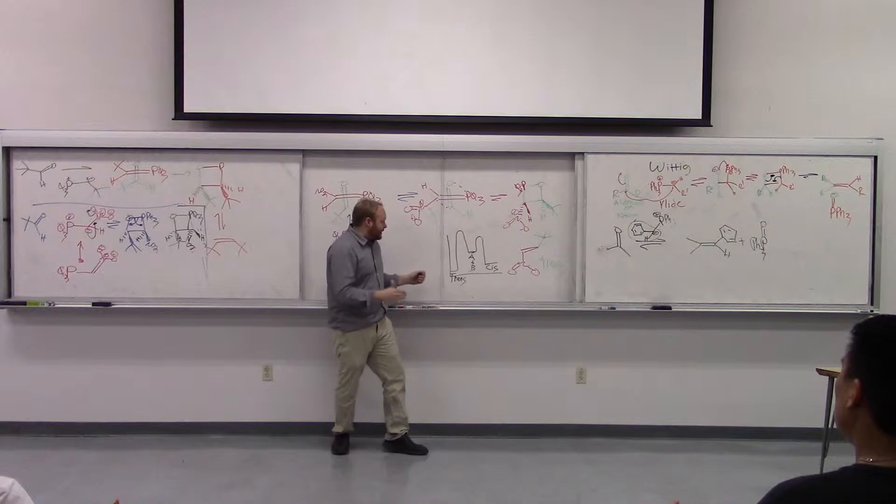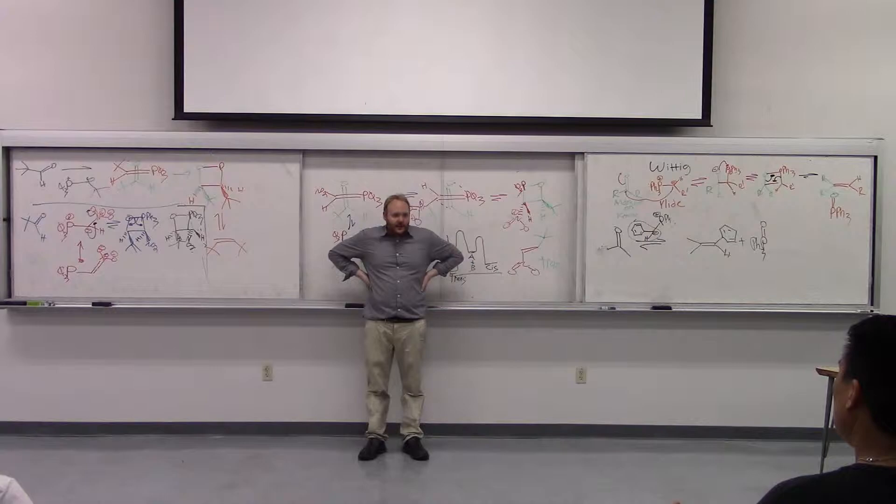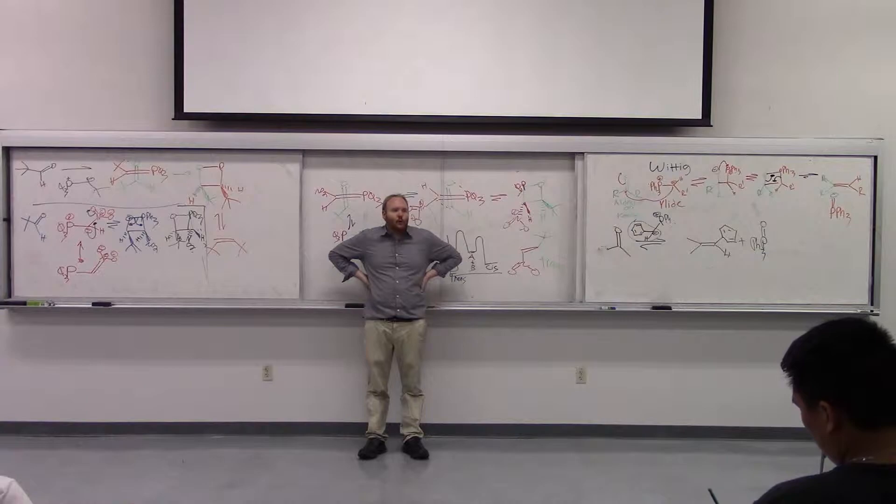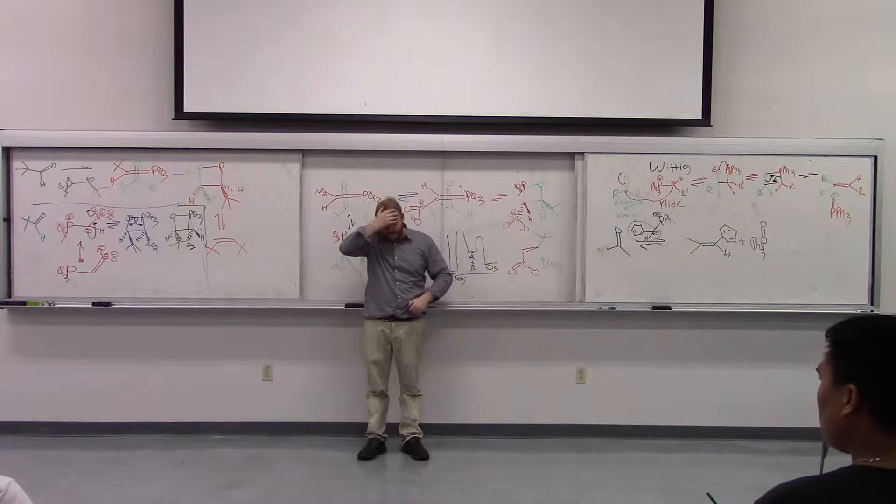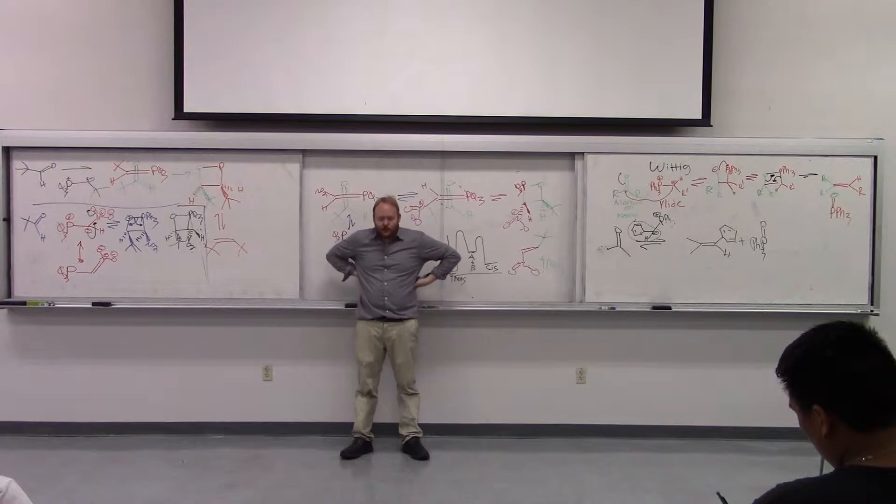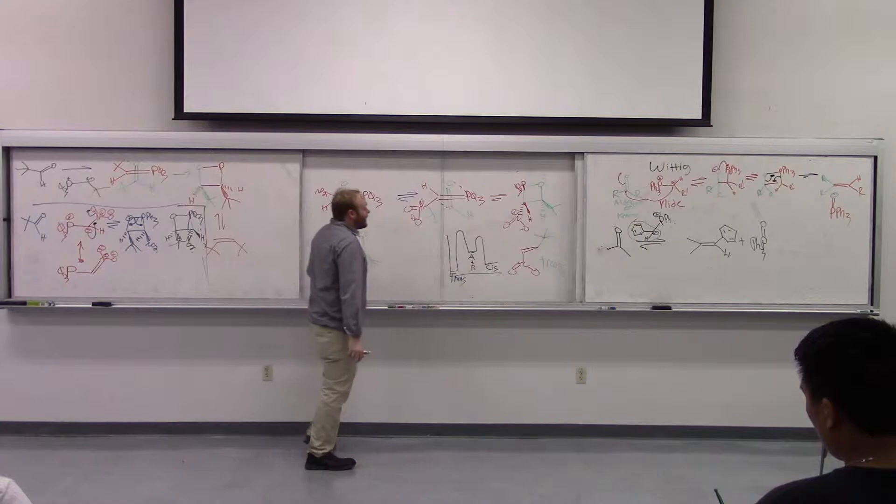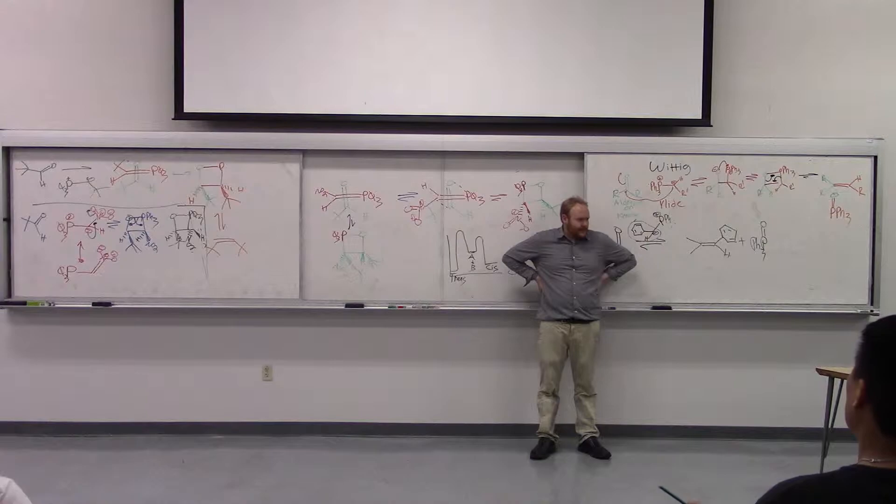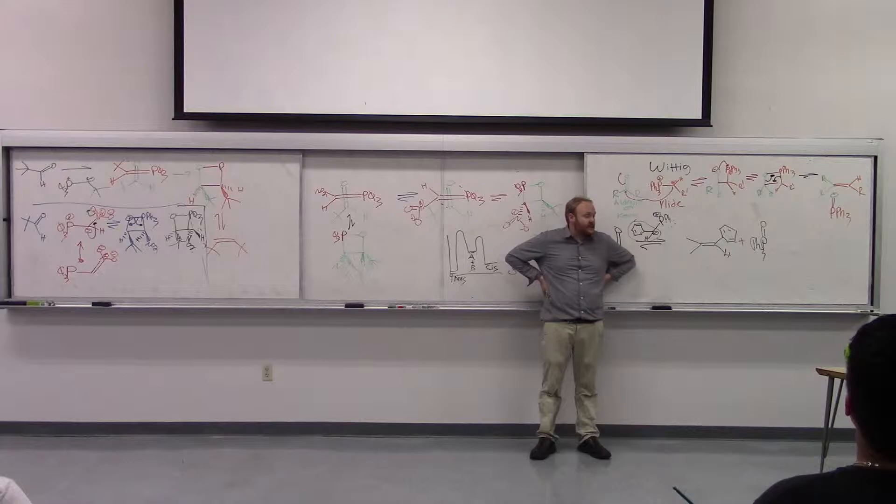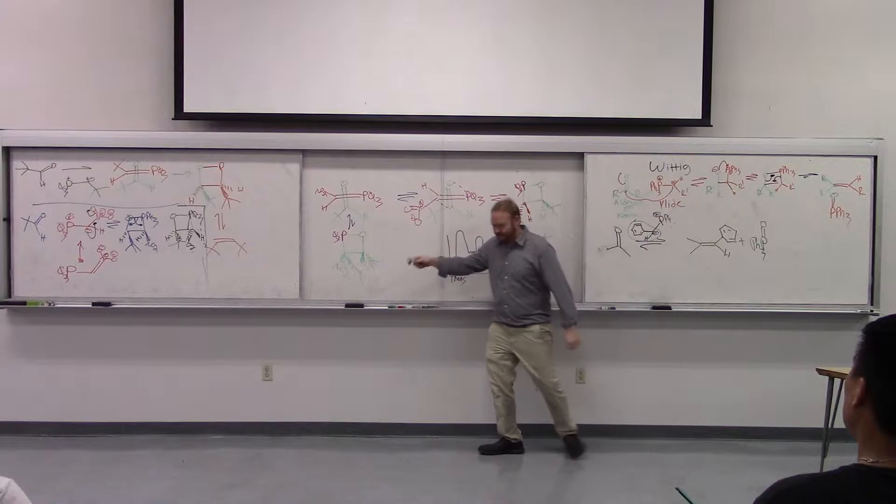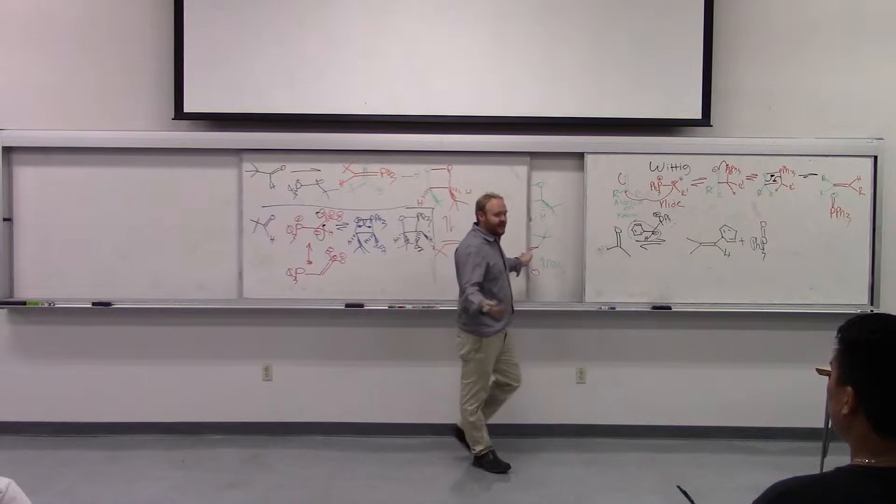So the take home message is electron withdrawing groups give us thermodynamic and trans. Electron donating and electron neutral groups give us, electron withdrawing give us trans, electron rich electron neutral substituent on the ylide will give us the cis. So that's a lot of talk about that stuff and I'm not going to go over Horner-Wadsworth-Emmons because the Horner-Wadsworth-Emmons is just another version. Nothing really changes.